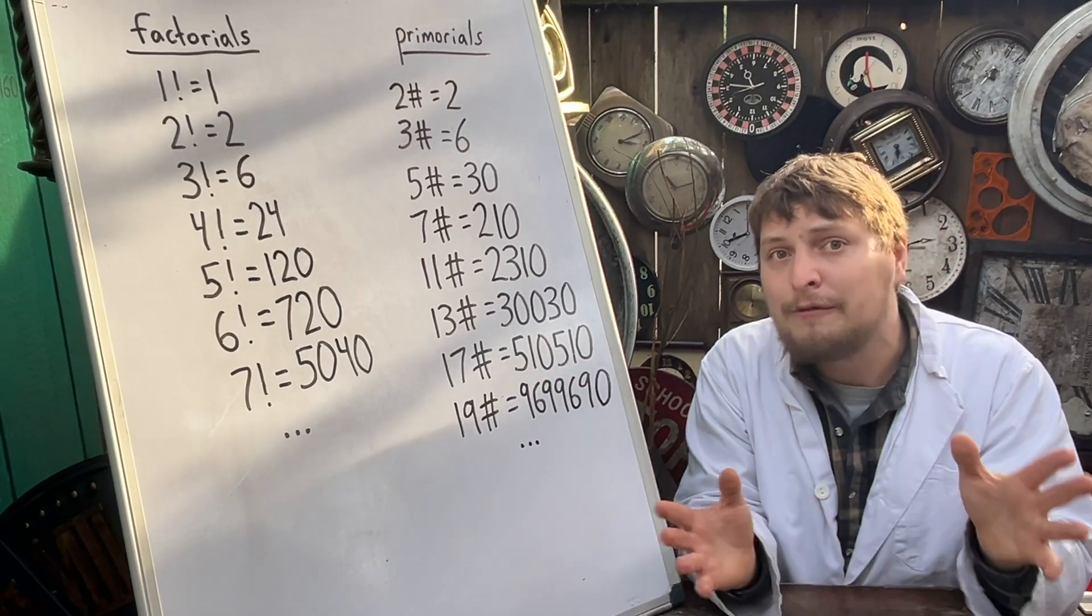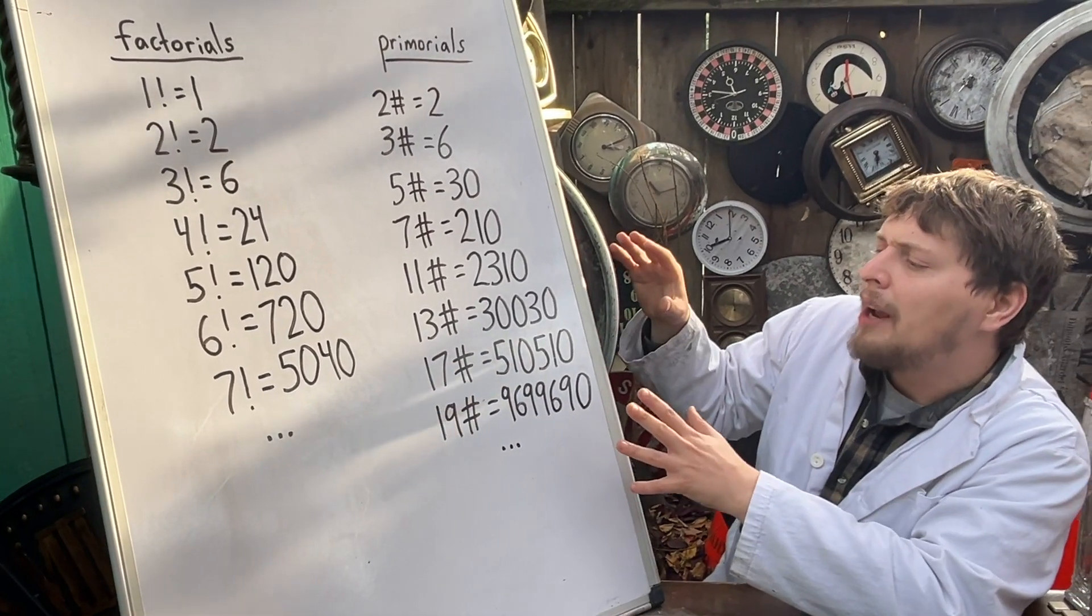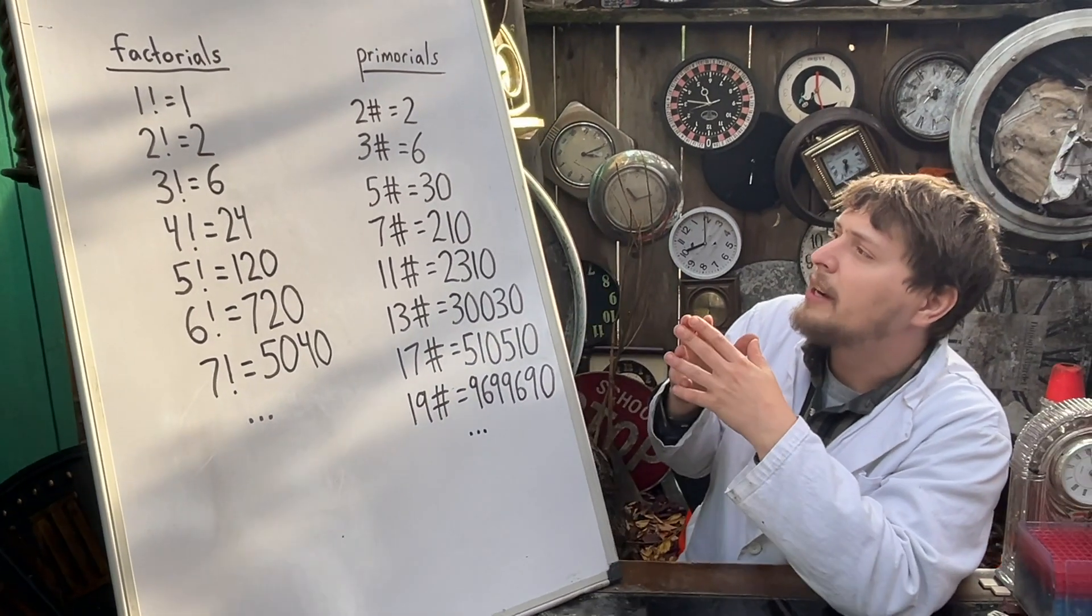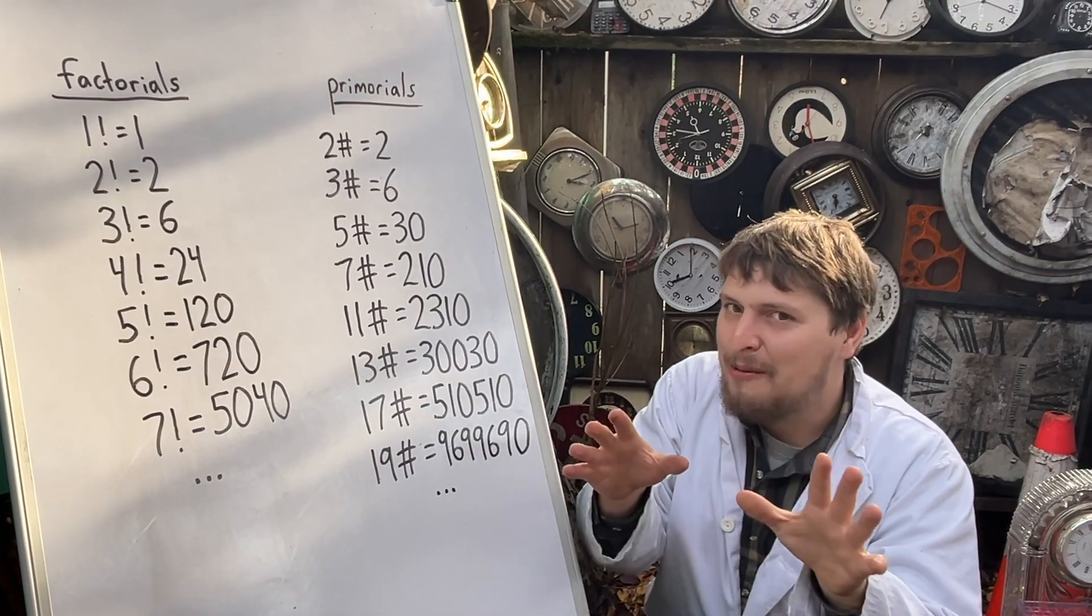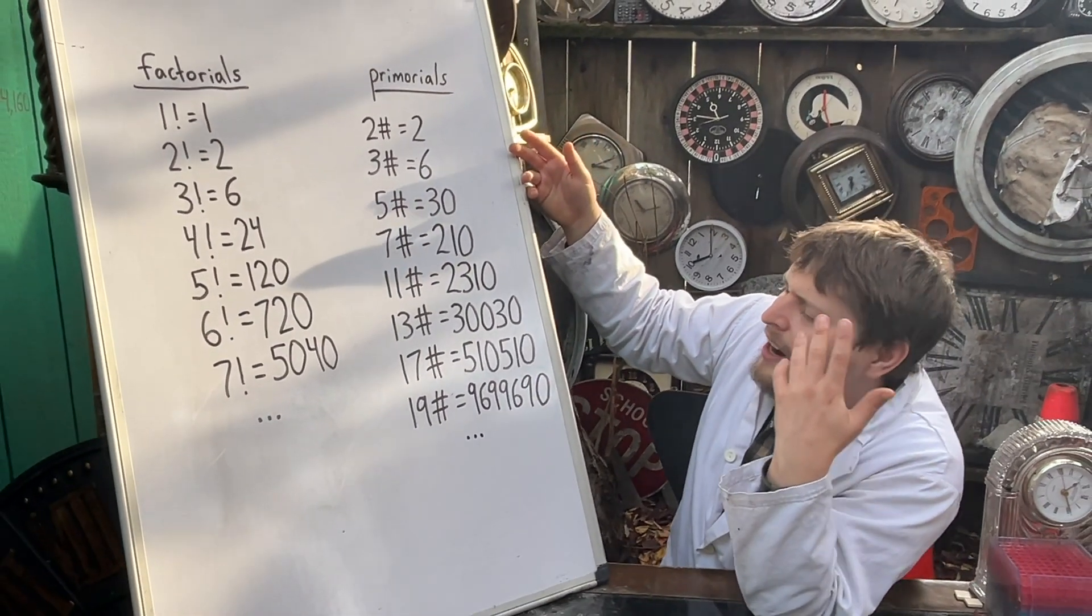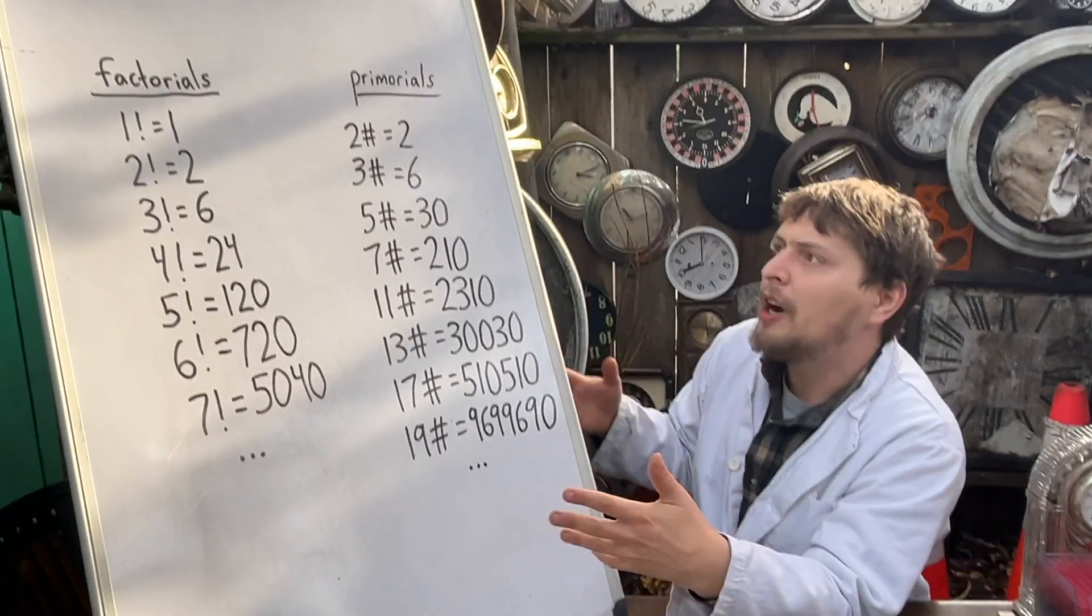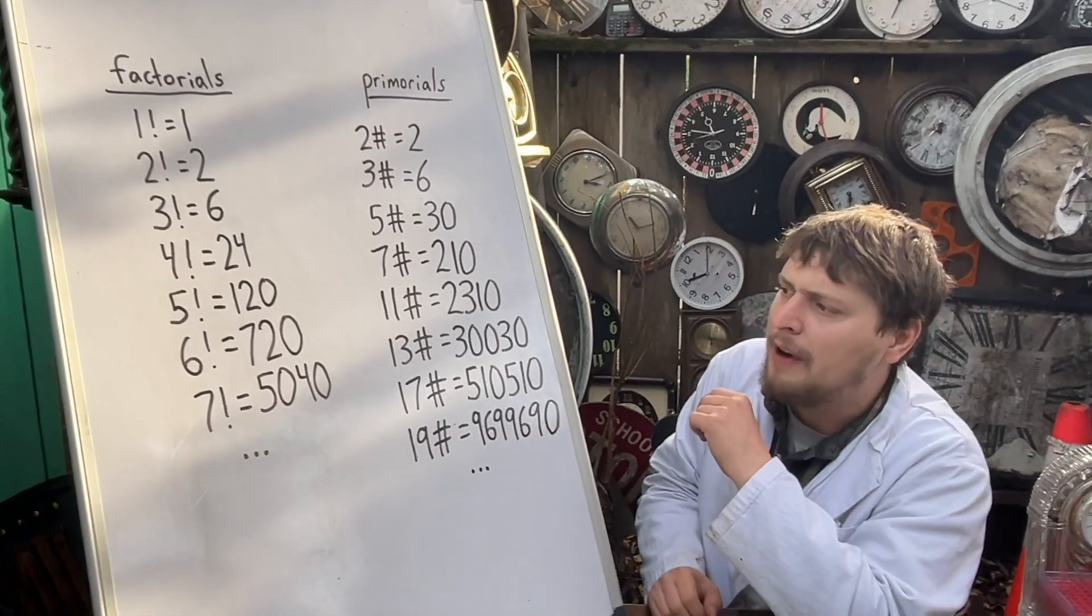That's something that many of you may have already realized about factorials, but I'd never thought about how a similar question would apply to primorials. Now, at first, when I wasn't thinking about it very much, in the back of my head, I kind of thought a really large primorial would probably end in a bunch of zeros like a really large factorial.